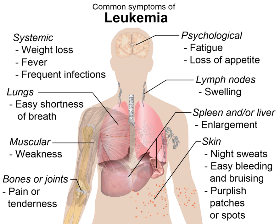A construct in the philosophy of science is an ideal object, where the existence of the thing may be said to depend upon a subject's mind. This contrasts with a real object, where existence does not seem to depend on the existence of a mind. In a scientific theory, particularly within psychology, a hypothetical construct is an explanatory variable which is not directly observable.